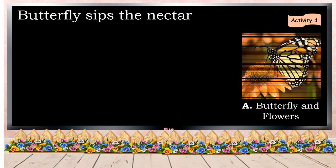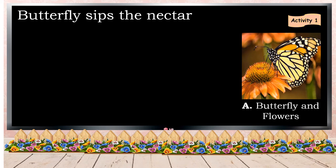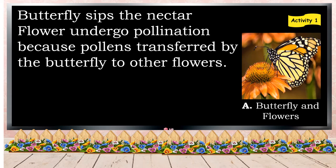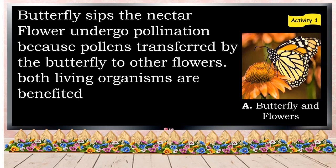As you can see in the picture, there is a butterfly and the flower. The butterfly sips the nectar of the flower and the flower undergoes pollination because the pollens are transferred by the butterfly to other flowers as it flew. Both living organisms are benefited and their relationship is called mutualism.